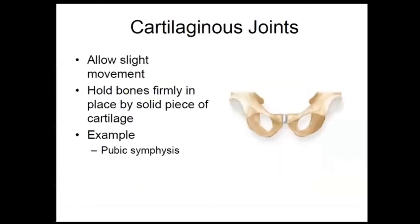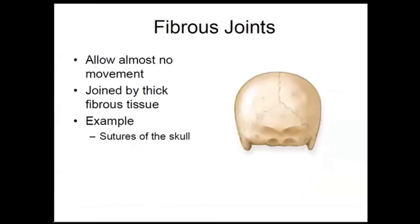Cartilaginous joints allow slight movement and hold bones firmly in place with a solid piece of cartilage — for example, the pubic symphysis. Fibrous joints allow almost no movement and are joined by thick fibrous tissue — for example, the sutures of the skull.